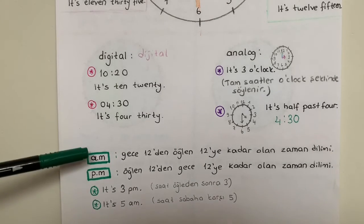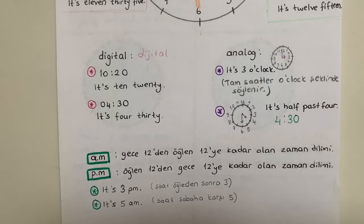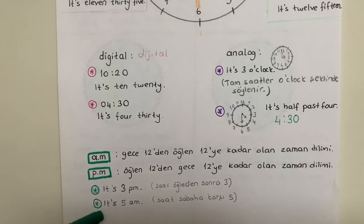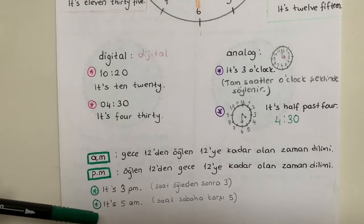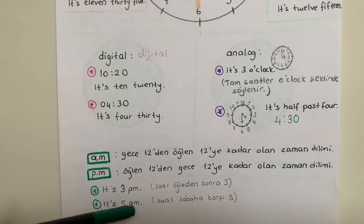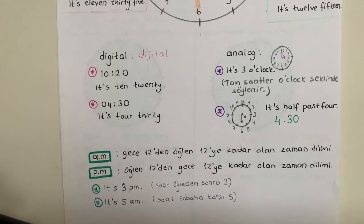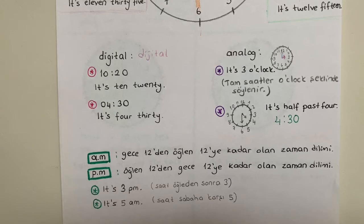For example, örneğin, it's 3 PM dediğimde, ben öğleden sonra 3'ten bahsettiğimi anlayabilirim. Or if I say it's 5 AM, it is in the morning - eğer saat 5 AM olarak söylersem de sabaha karşı 5 olduğunu anlayabilirim.